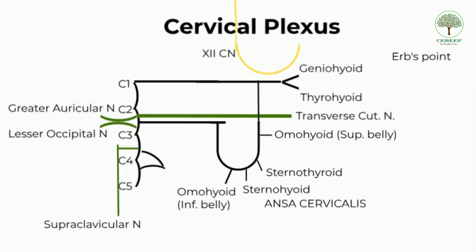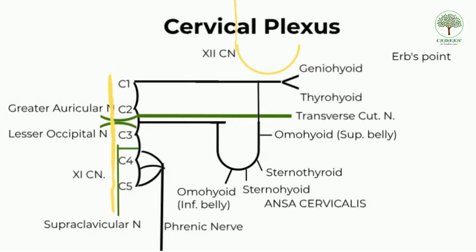The nerve roots C3, C4, and C5 unite to form the phrenic nerve, which innervates the diaphragm. The spinal accessory nerve, another cranial nerve closely related to the cervical plexus, communicates with branches from C2 and C3. In conclusion, the cervical plexus has four cutaneous branches and six motor branches.